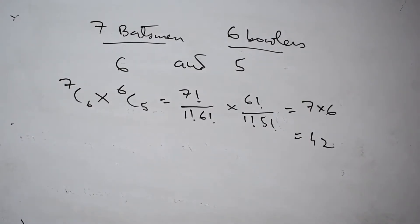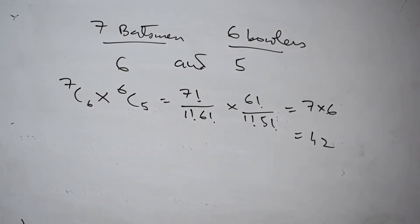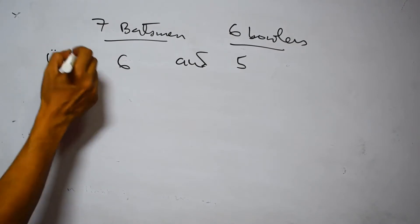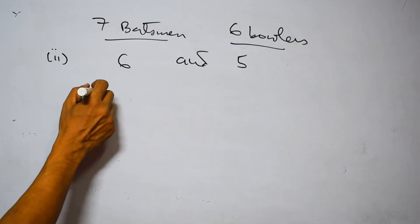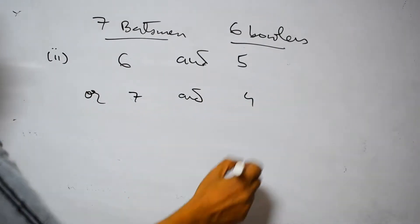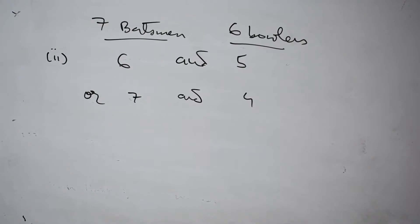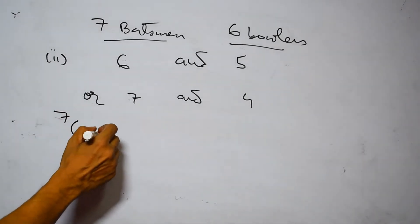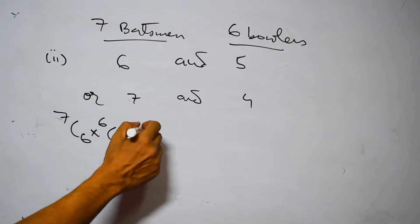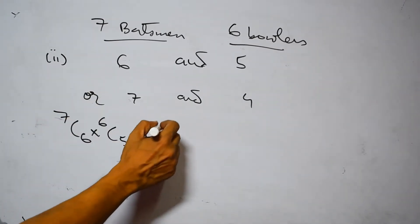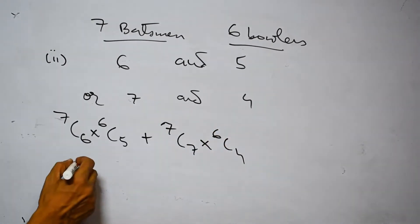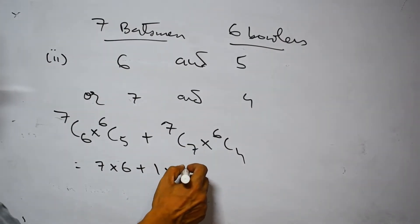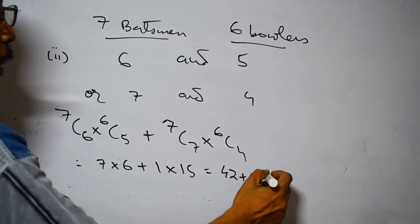The second part: at least six batsmen must be present, meaning six or more. So the cases are: six batsmen and five bowlers, OR seven batsmen and four bowlers. The result is 7C6 times 6C5 plus 7C7 times 6C4, which equals 7 times 6 plus 1 times 15, giving 42 plus 15 equals 57 ways.